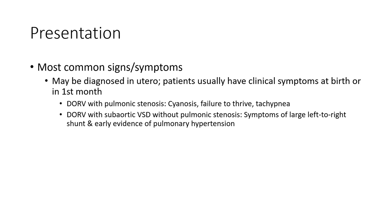Double outlet right ventricle with subarterial VSD without pulmonary stenosis presents with symptoms of large left-to-right shunting, including signs and symptoms of pulmonary hypertension.